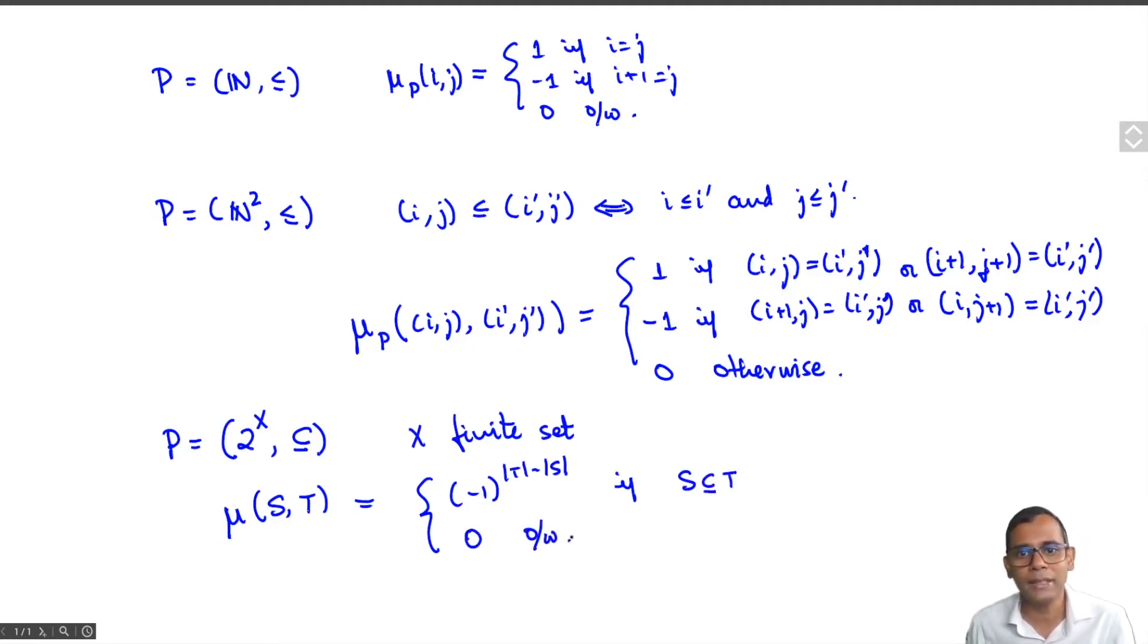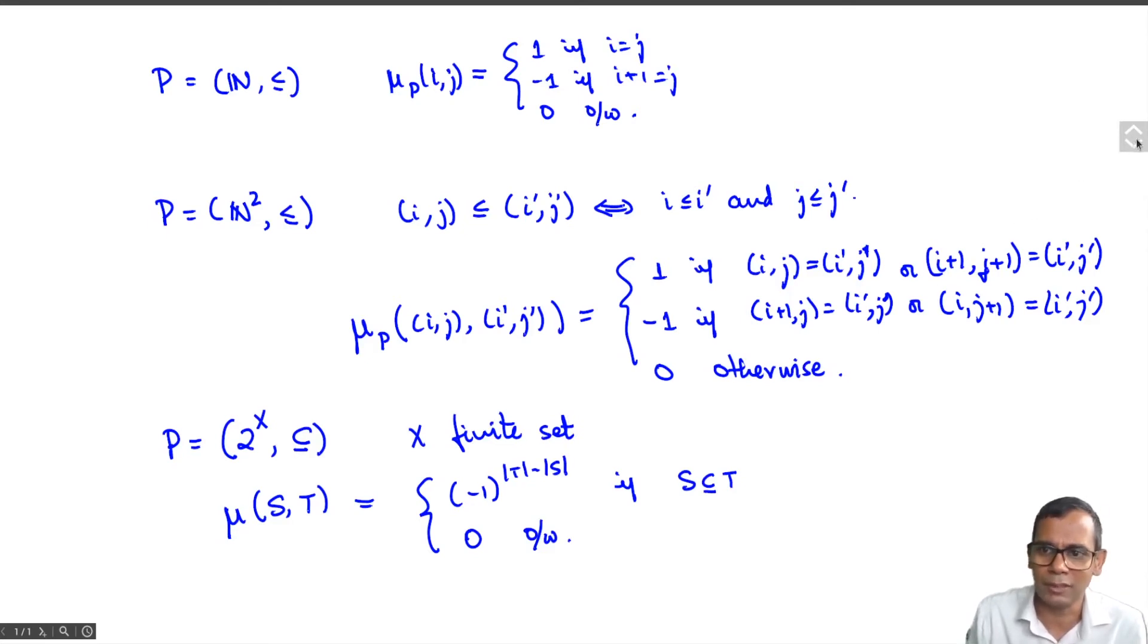So this Mobius function only takes the values plus 1 or minus 1. In fact, you see there seems to be a common phenomenon that many Mobius functions only take values plus 1 and minus 1. It may be a while before we see one which does not.